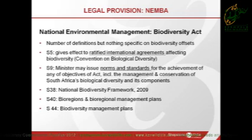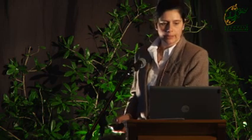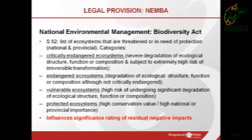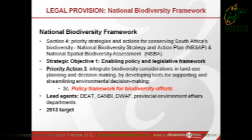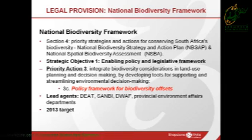The other act I'll touch on briefly is the Biodiversity Act. It allows for the minister to issue norms and standards, and also for the National Biodiversity Framework. It also allows for lists of ecosystems that are threatened, and again this influences the significance rating of residual negative impacts. Importantly, in terms of our National Biodiversity Framework, one of the strategic objectives is an enabling policy and legislative framework, and an action under Priority Action 3 is to develop a national policy framework for biodiversity offsets, currently being developed by SANBI.